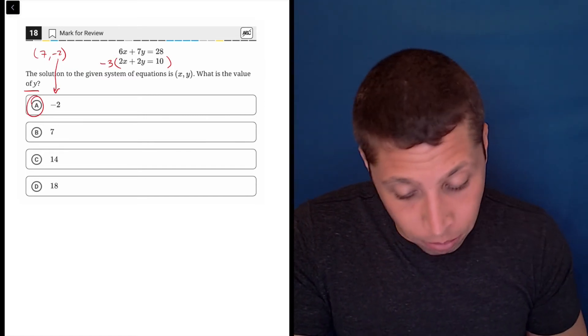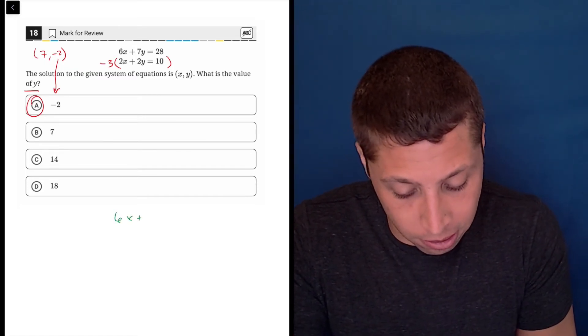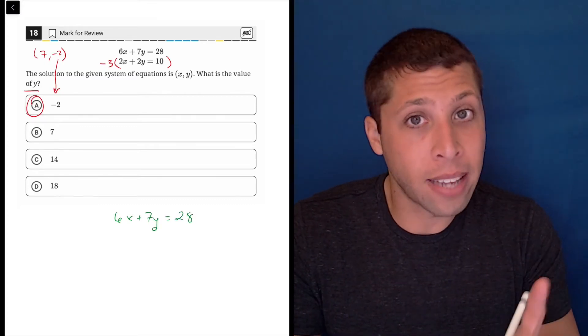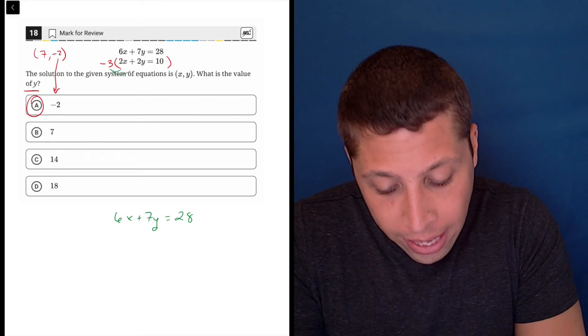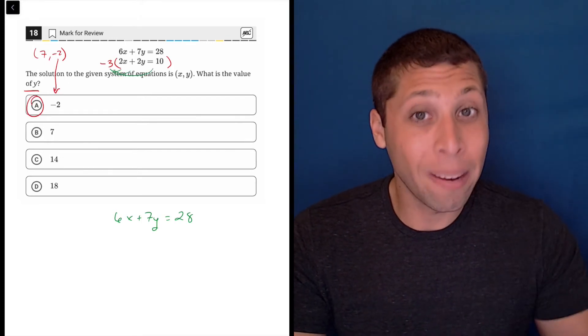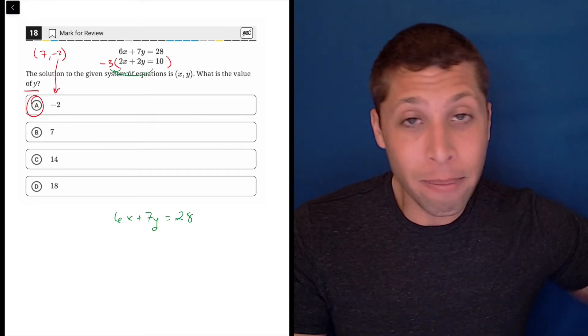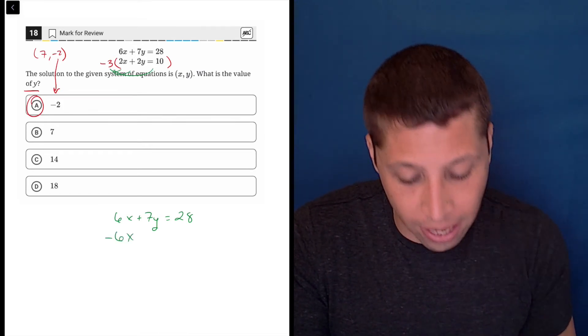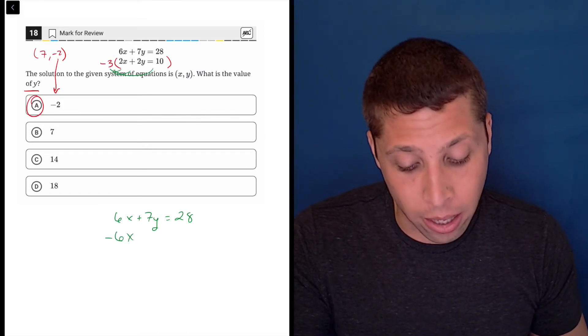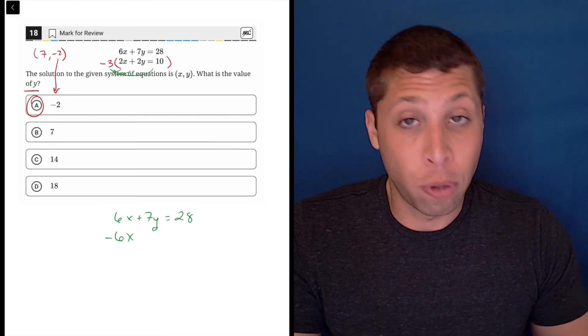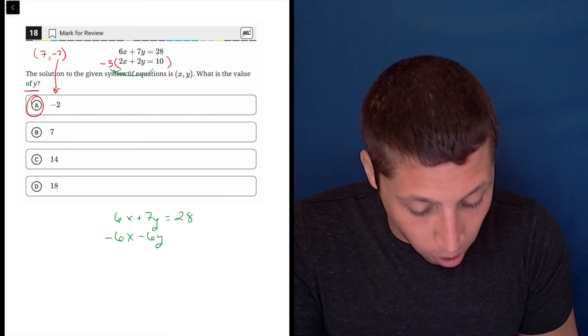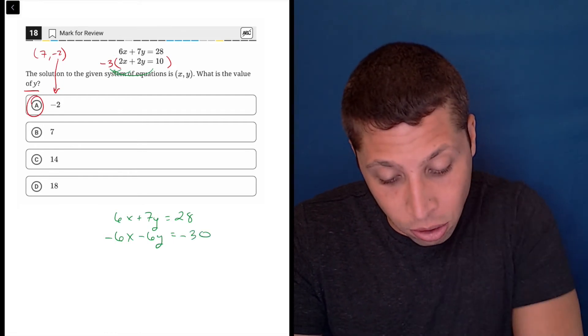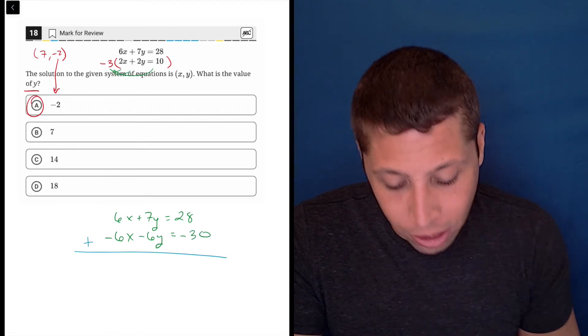Now, if I do this, right, I'm just going to rewrite what I have. I'd have 6x plus 7y is equal to 28. Now, this is where the mistake tends to happen. We've got to multiply that negative 3 into all the parts. So that means the 3 and it means the negative. So negative 3 times 2x is negative 6x, which shouldn't surprise us. That's what we wanted. Negative 3 times 2y is negative 6y. And negative 3 times 10 is negative 30. And so when we add these two equations together,